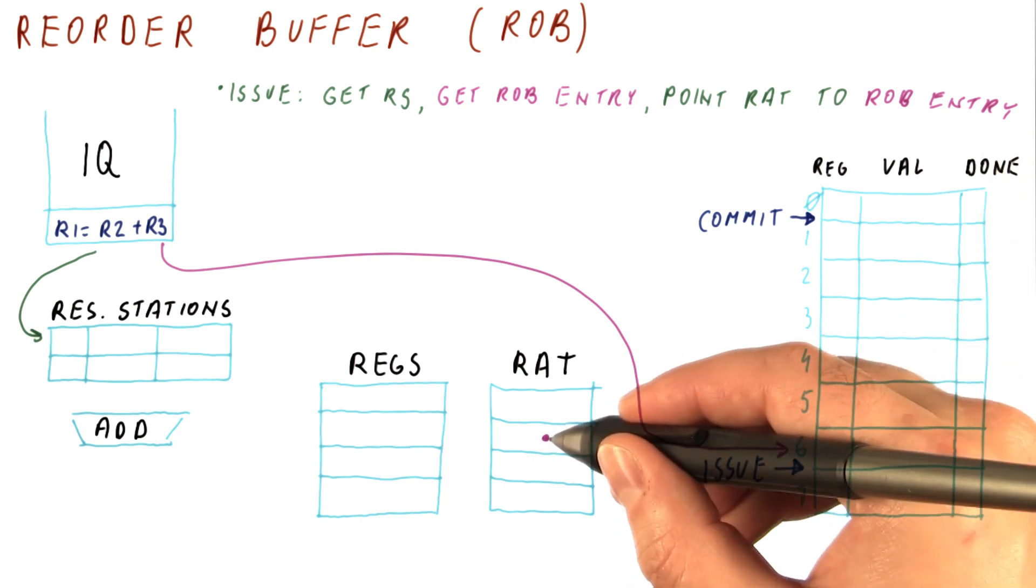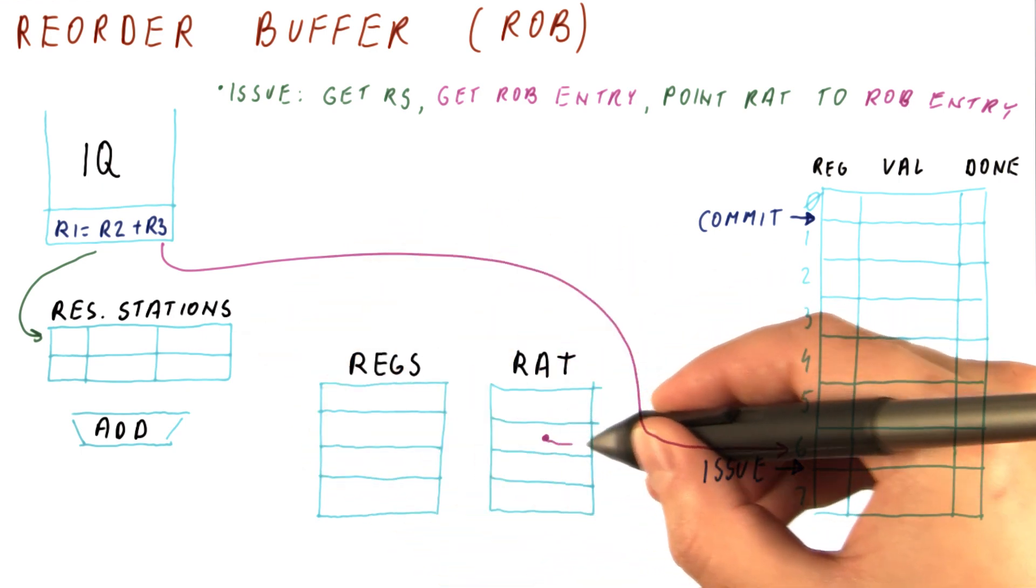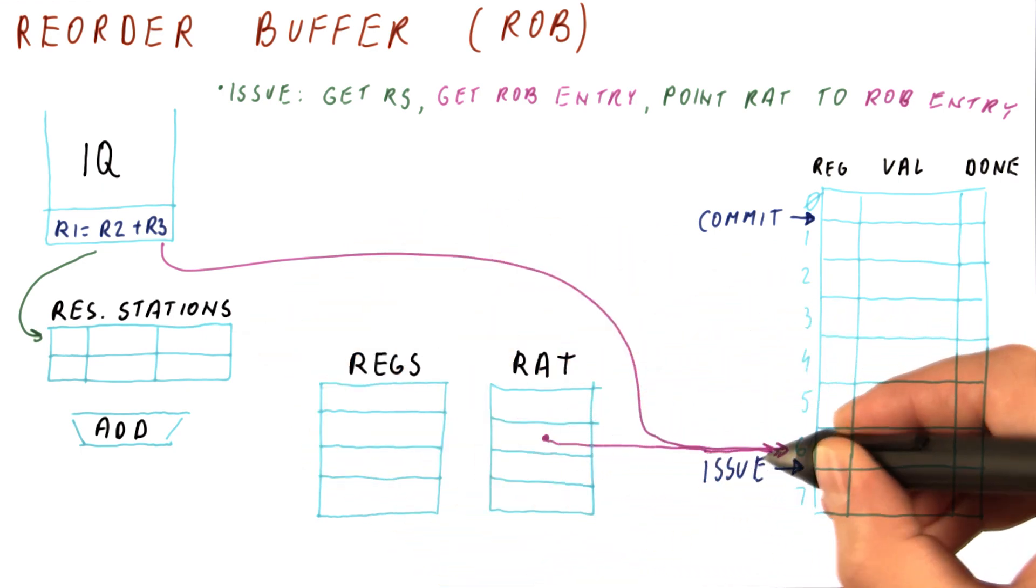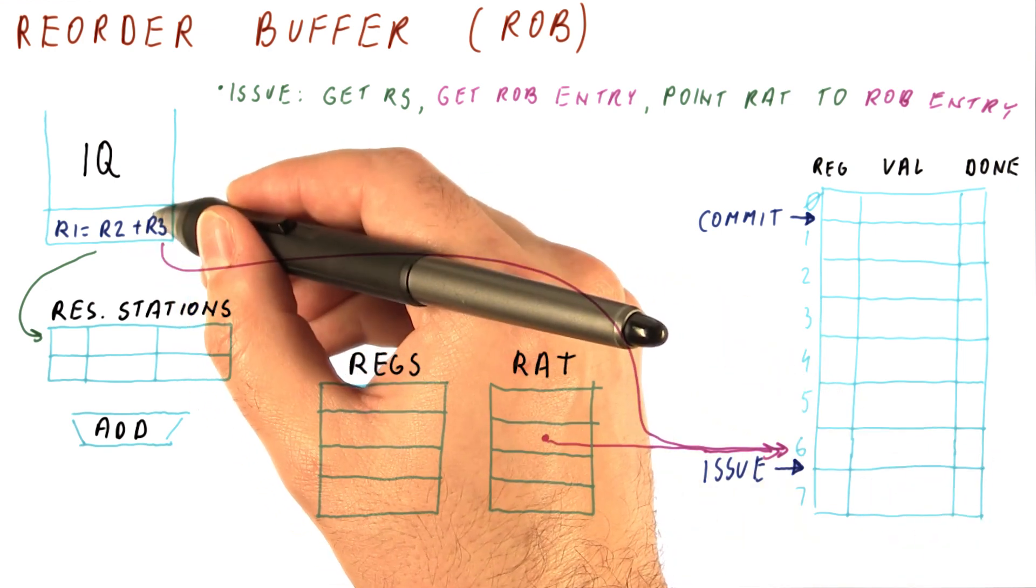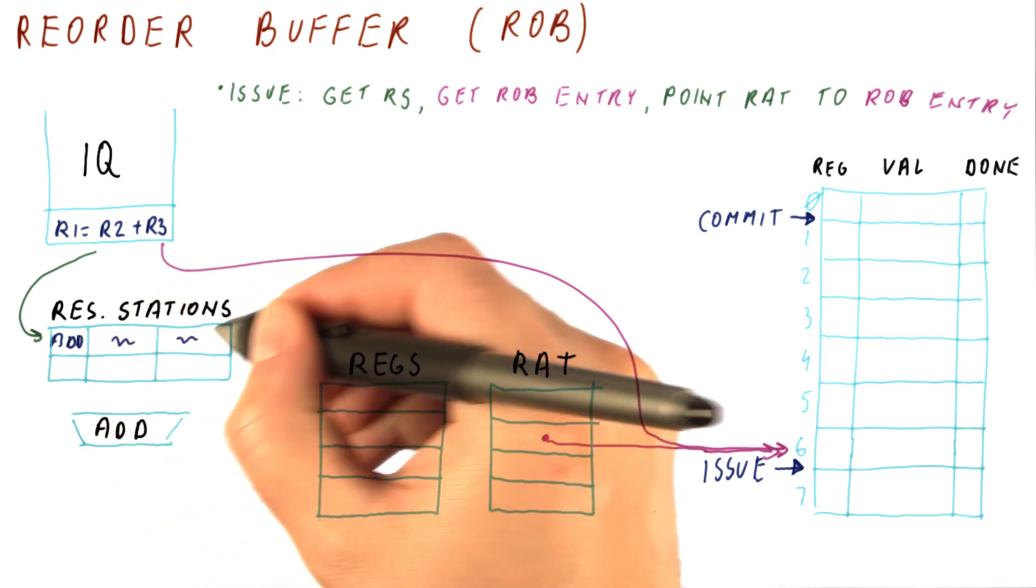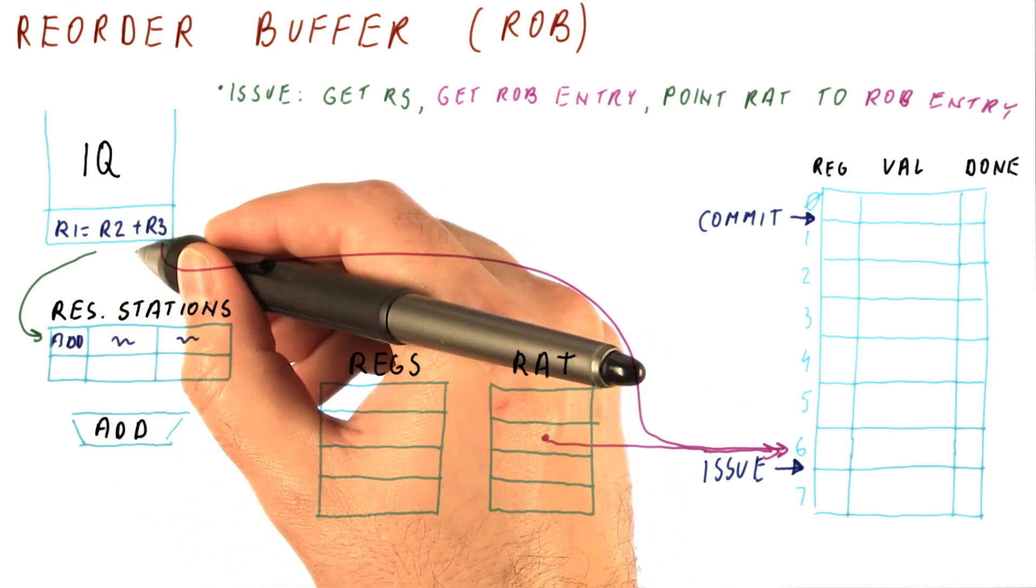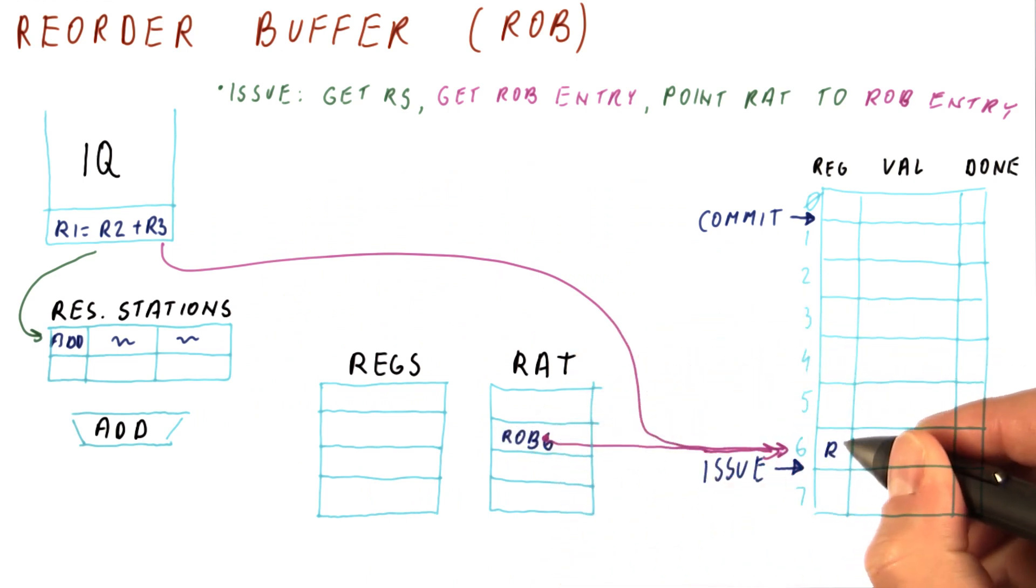That means that this RAT entry will be now, instead of pointing to the reservation station, be pointing to this entry here. So overall at the end of the cycle when we issue this instruction, we will occupy a reservation station with the values that we found for these registers. We will make the RAT point to the ROB6 entry. And in this entry we will say that R1 will need to be written for this instruction and we don't still have the value. So the done bit is zero here for this instruction.